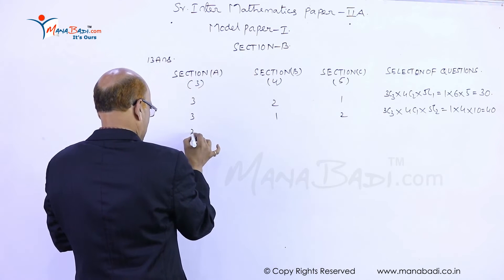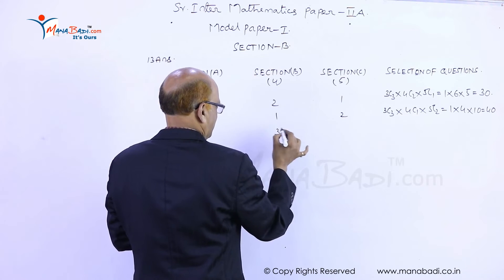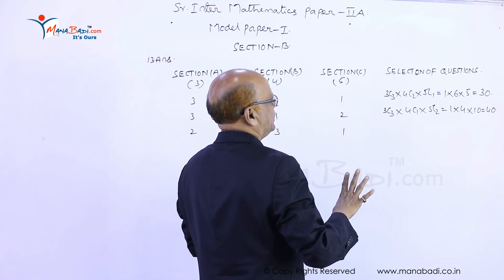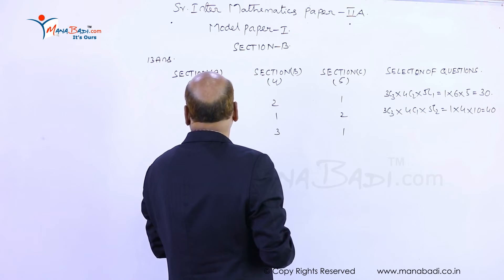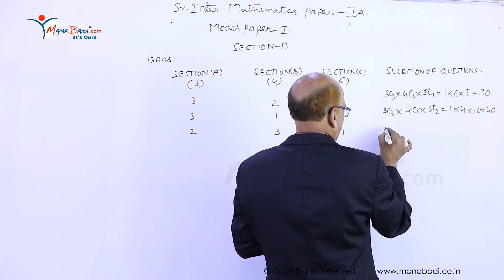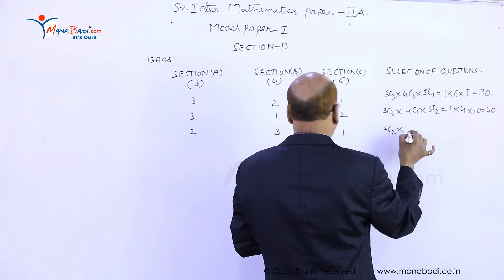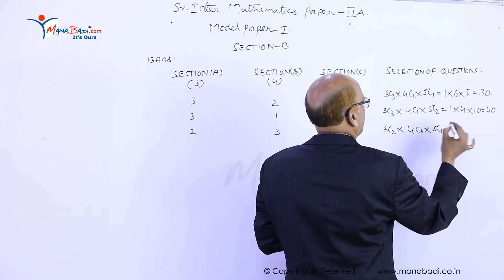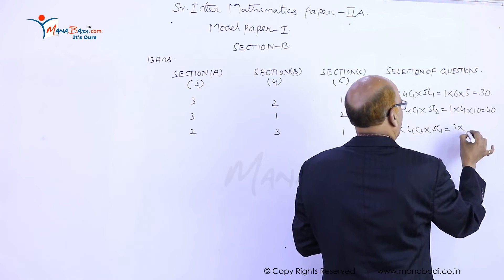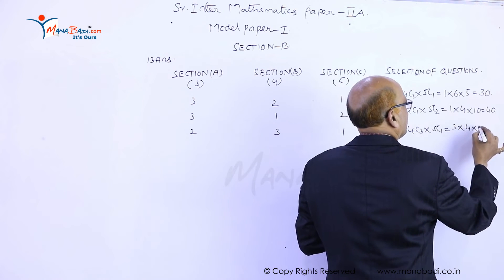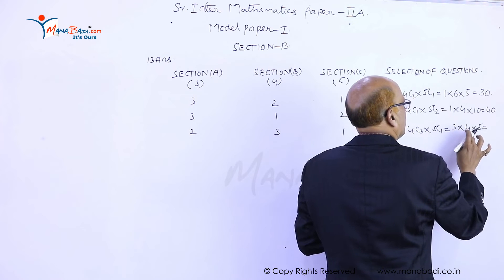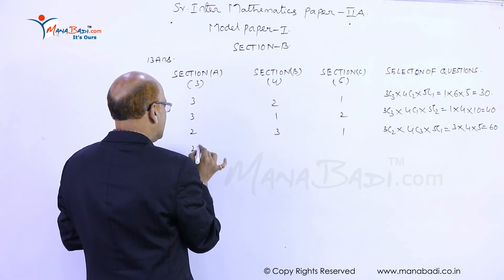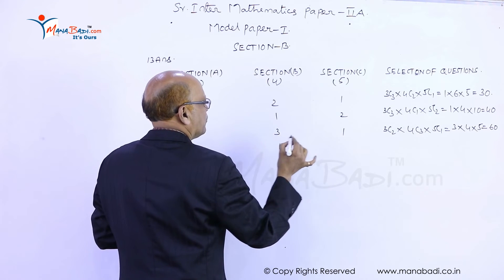Next: I'll take two questions from section A, three questions from section B, and one question from section C, because the problem asks for at least six questions. Out of three we select two: 3C2 into 4C3 into 5C1. 3C2 is 3, 4C3 is 4, and 5C1 is 5, giving 12 into 5 equals 60.